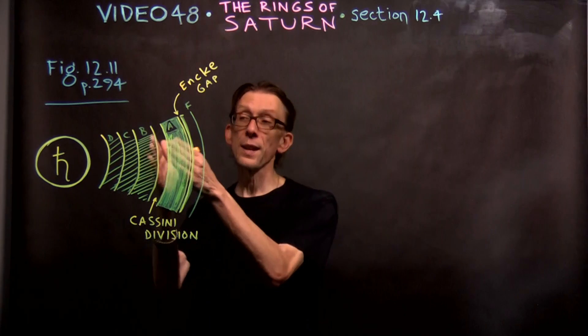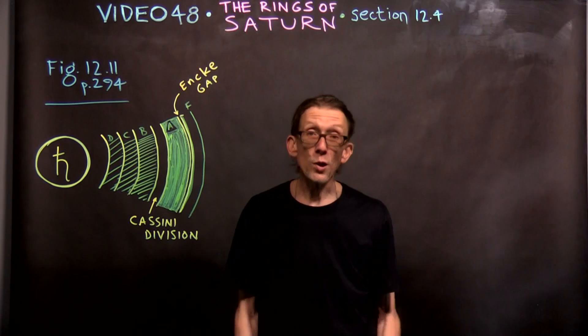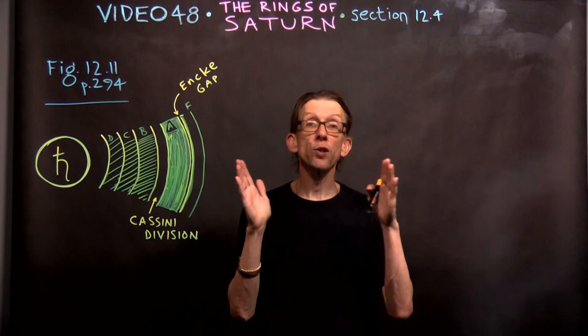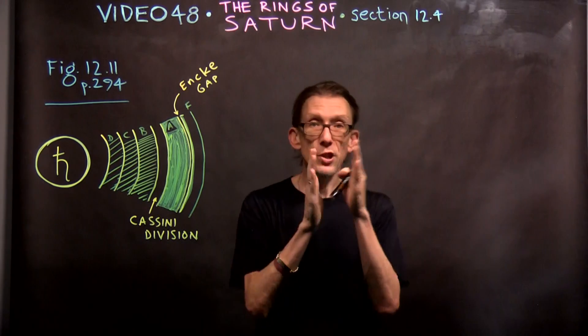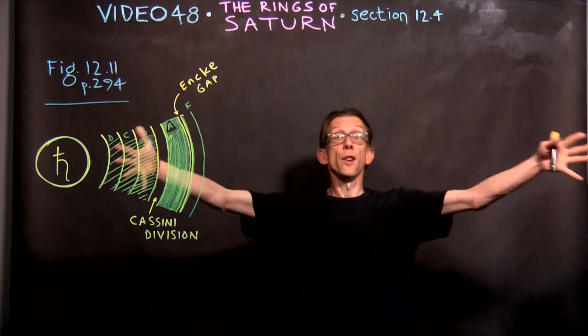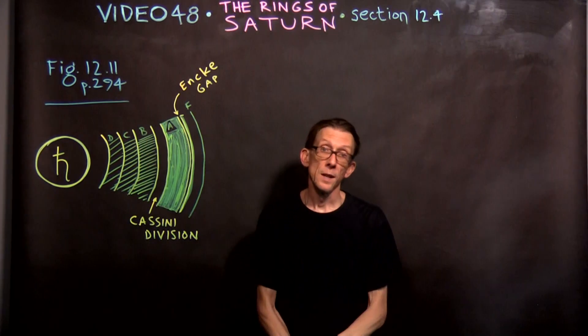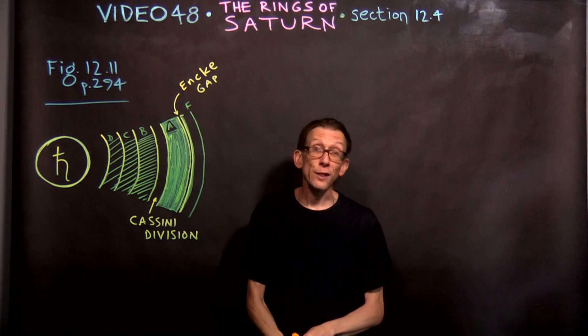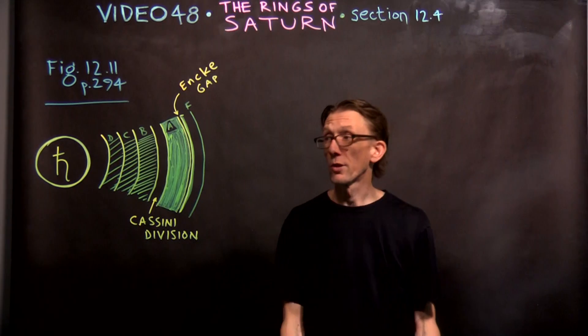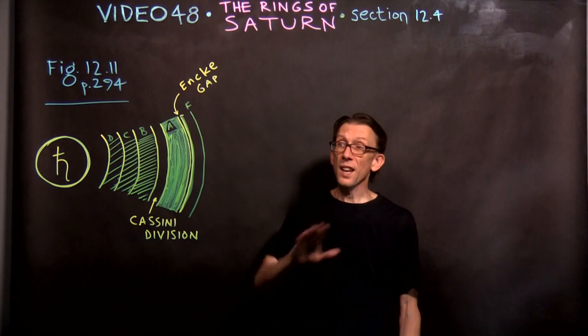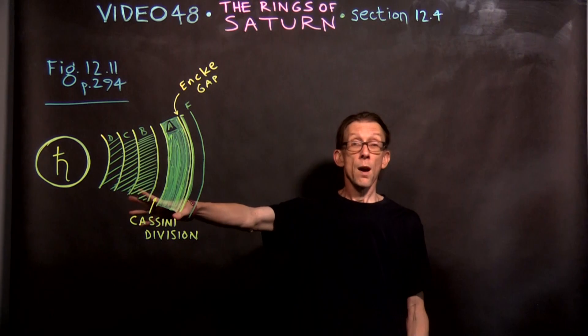But if you look up at any one of these rings, A, B, C, D, whatever, you'll start to see that they are composed of thousands upon thousands of thinner, more highly structured rings within these. This is just the broadest possible picture. There are rings within rings within rings. I don't know if you know what the word fractal means, but the rings sort of approach what is called in mathematics a fractal structure, which is really, really fascinating.